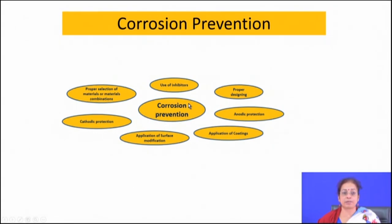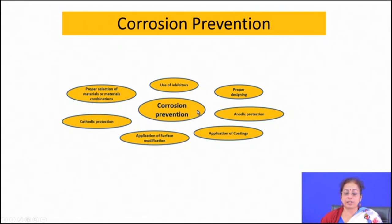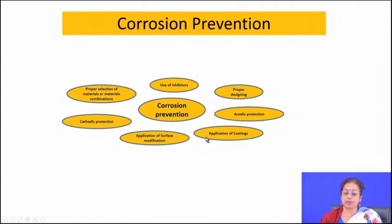Most of the ways are applicable for combating aqueous corrosion, and some of the techniques are applicable for combating liquid metal corrosion, and some techniques are for high temperature oxidation. Aqueous corrosion problems can be circumvented or reduced by choice of proper materials, by application of cathodic protection, anodic protection, inhibitors, proper component design, and surface modification and coating techniques.